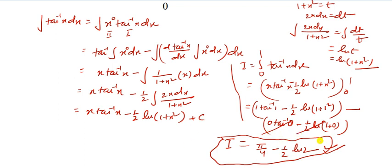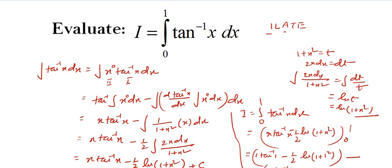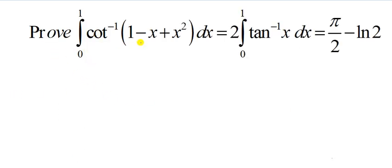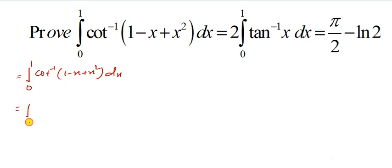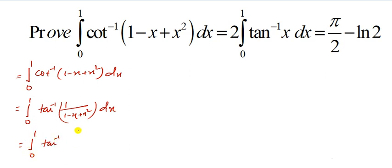Now, using this result, we have to solve another integration. Let's prove that the integral from 0 to 1 of cot inverse(1 minus x plus x squared) dx equals 2 times the integral from 0 to 1 of tan inverse x dx, and that its value is pi by 2 minus ln 2. Since cot inverse x equals tan inverse(1/x), we can rewrite the integrand as tan inverse of [1 over (1 minus x plus x squared)].